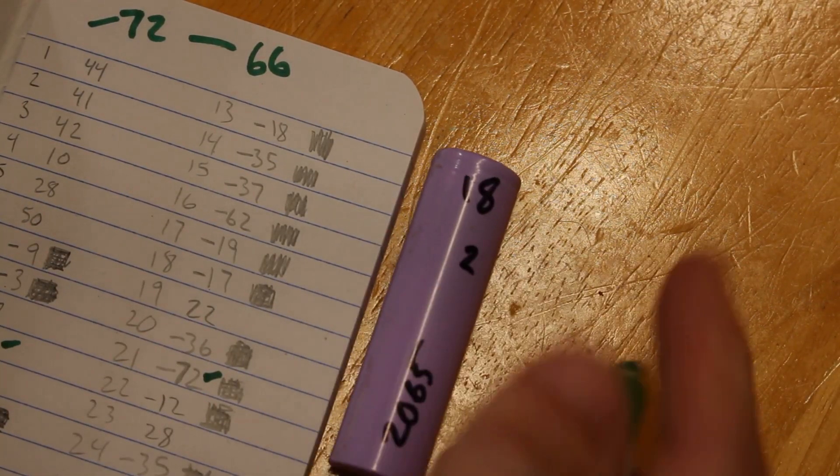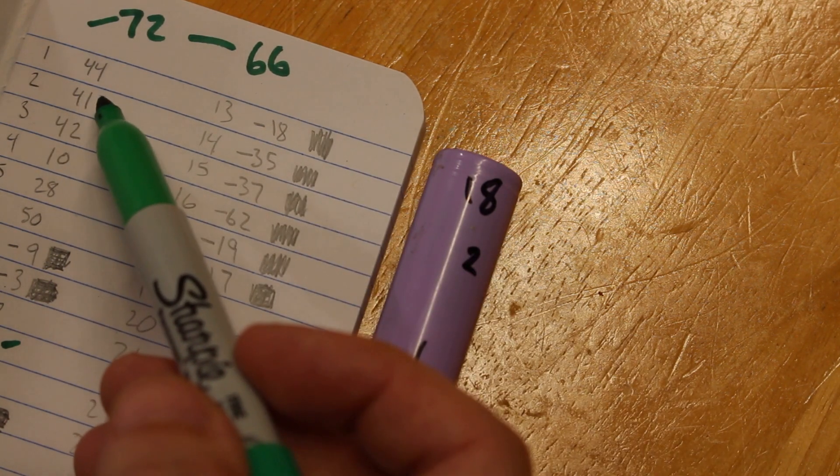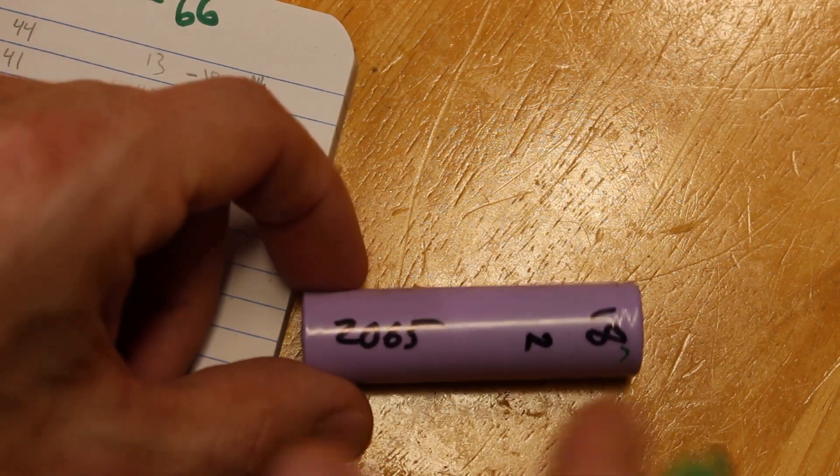Okay, so here's a cell. It was charged in bay 2. And if I look over here, bay 2 needs to be shifted up by 41. So this guy was tested at 2065.